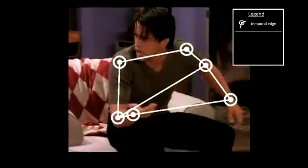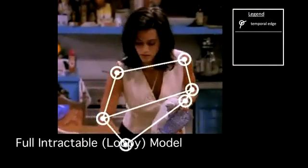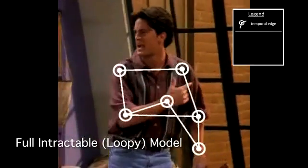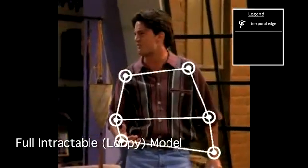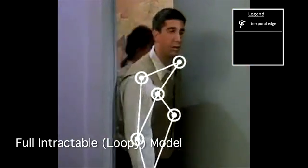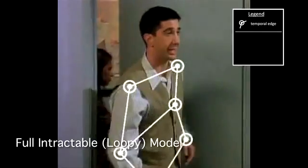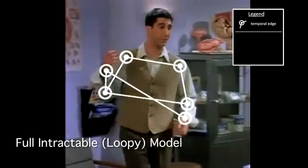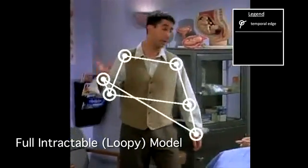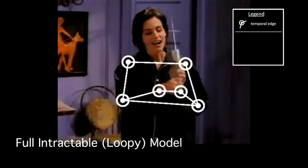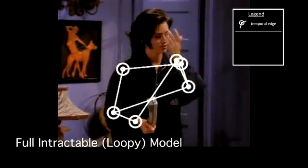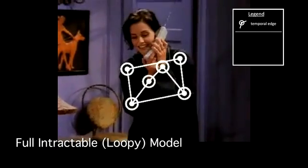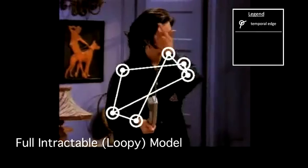We incorporate all of the features of the previous section into a single intractable model. Each joint is propagated throughout time with tracking features, and the color correspondence and geometry of each left-right pair is modeled as well. Because this model is intractable, we use an ensemble of six submodels that collectively cover each edge in the original model.